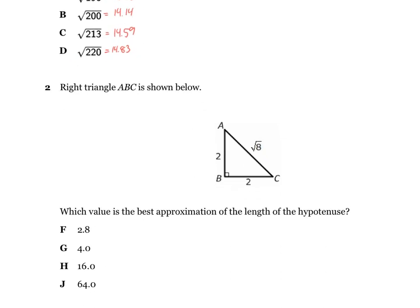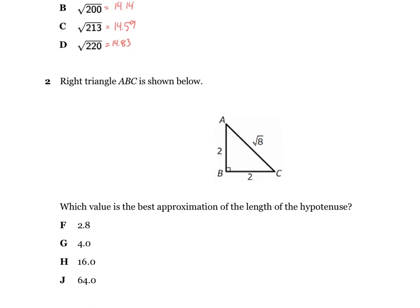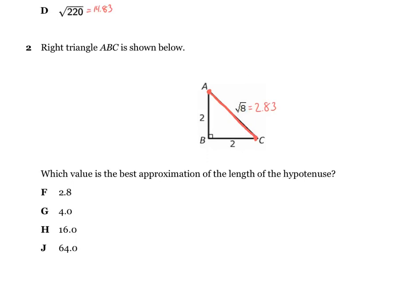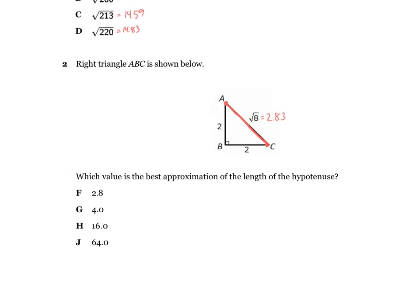Now on to number 2. It says right triangle ABC is shown below — which value is the best approximation for the length of the hypotenuse? From A to C, this is your hypotenuse. They already tell you that the answer is the square root of 8, so all you have to do is take the square root of 8 in your calculator. I get 2.8, which rounds up to 2.83. You're on your own for getting the answer.